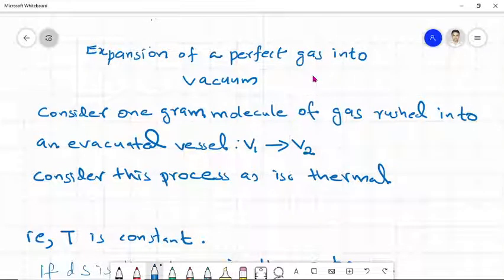Now we can look into the expansion of perfect gas into vacuum. Consider one gram molecule of gas rushed into an evacuated vessel. During this process, the volume changes from V1 to V2.